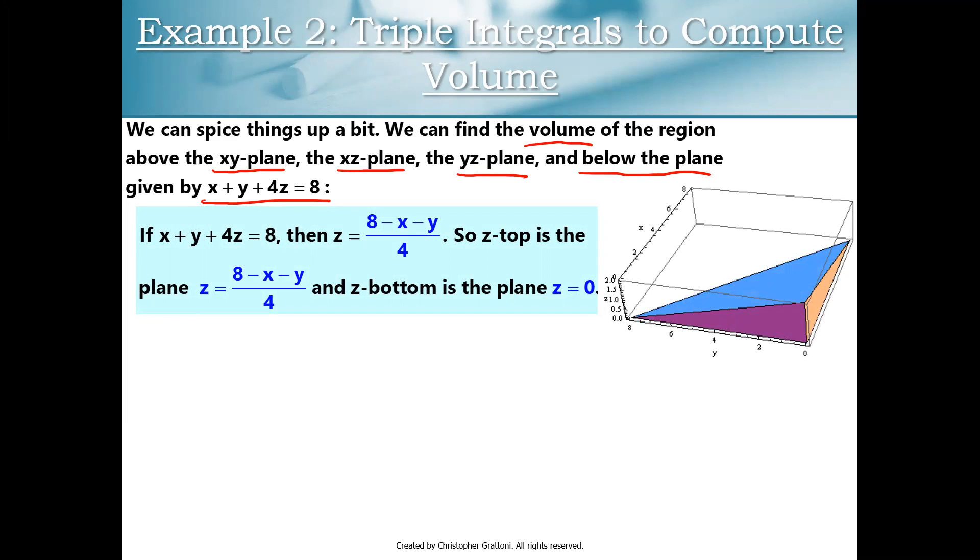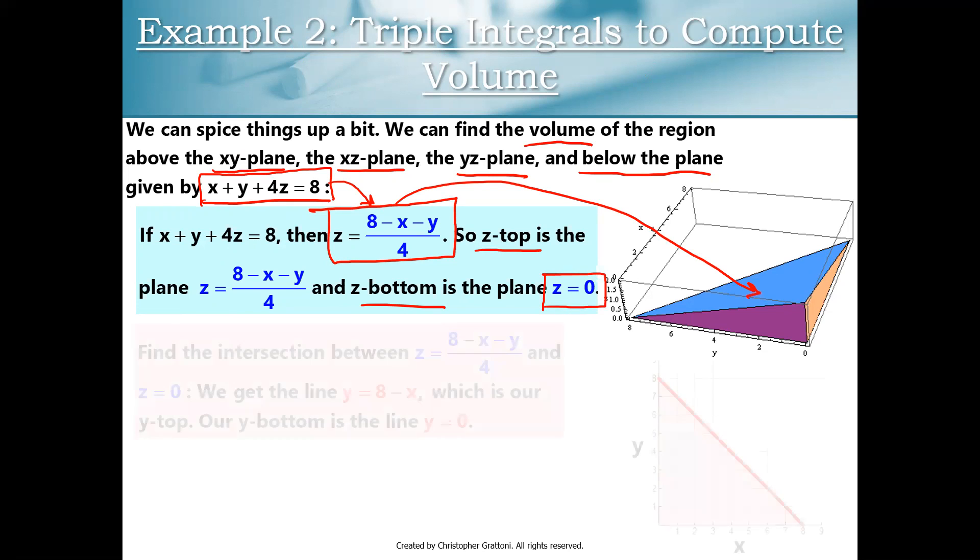You can see that on three sides, we just have a triangle on one of the coordinate planes. And then this equation, X plus Y plus 4Z equals 8, if you solve that for Z, gives you this blue plane that's sitting on top of our pyramid. Z equals 8 minus X minus Y all over 4. If we're setting up a triple integral, we need Z top and Z bottom.